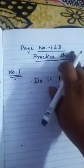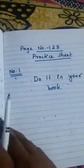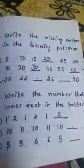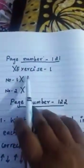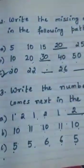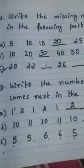Now on page number 125, Practice — do only number one in your book. Whatever exercises I have taught, you have to do them in the book. The remaining work I said to cancel out — that is page number 121, Exercise number 1, numbers one and two. From page number 122 to 125, do it in the book. Study hard, stay safe — thank you, children, bye!